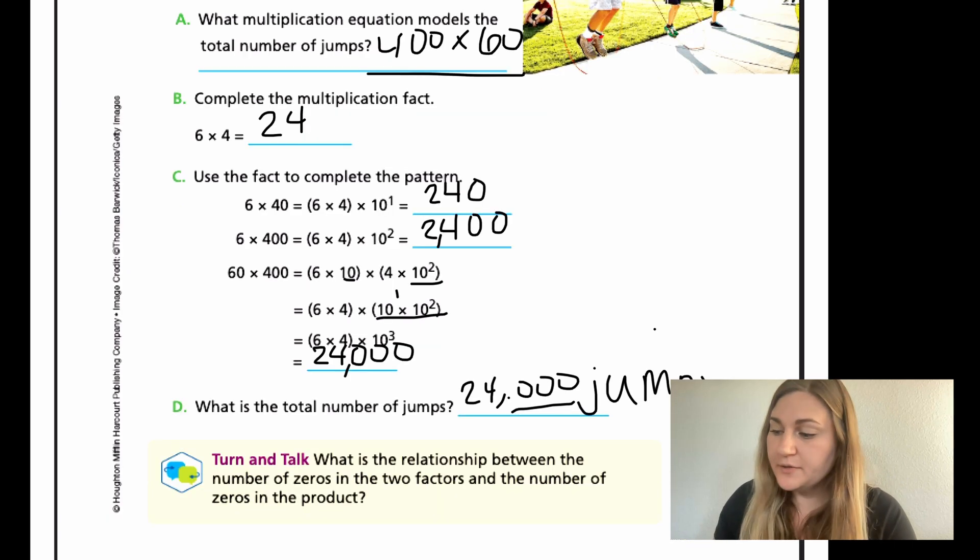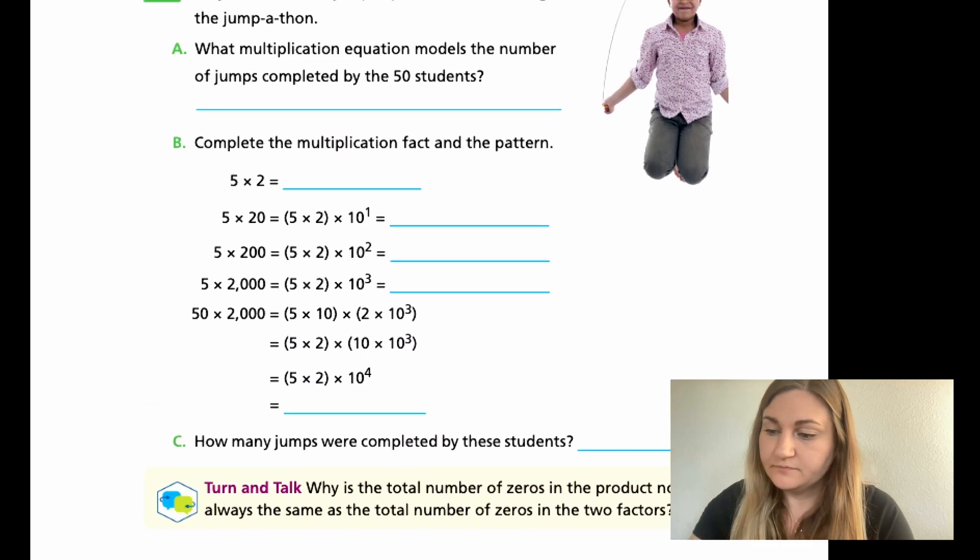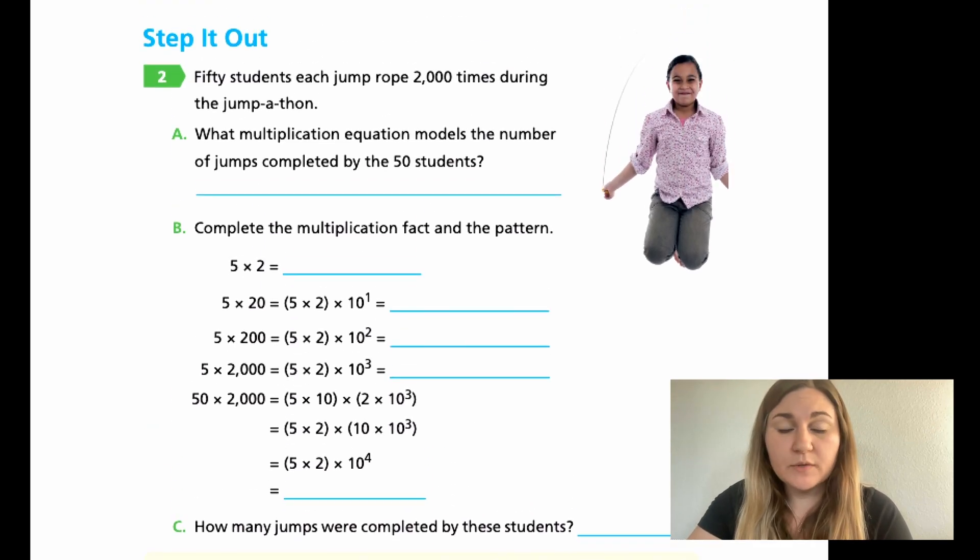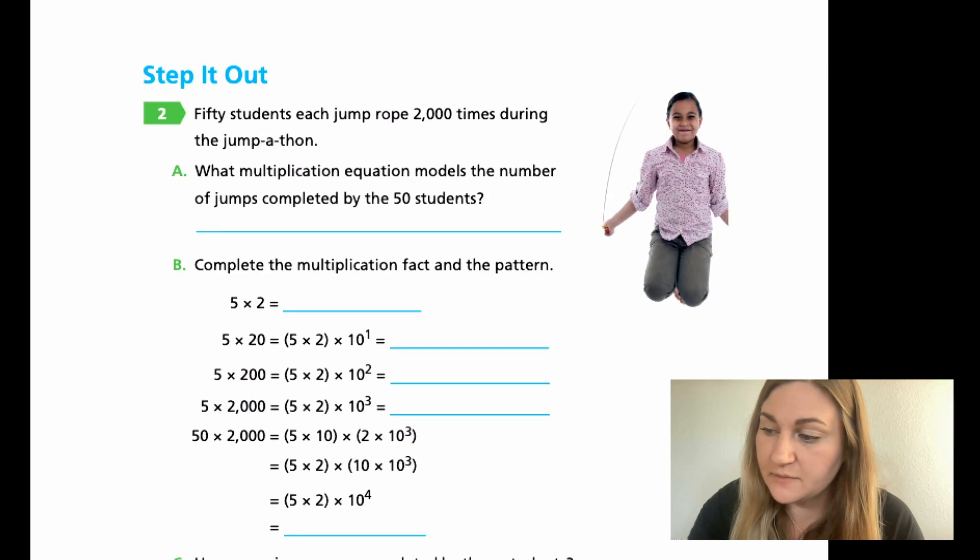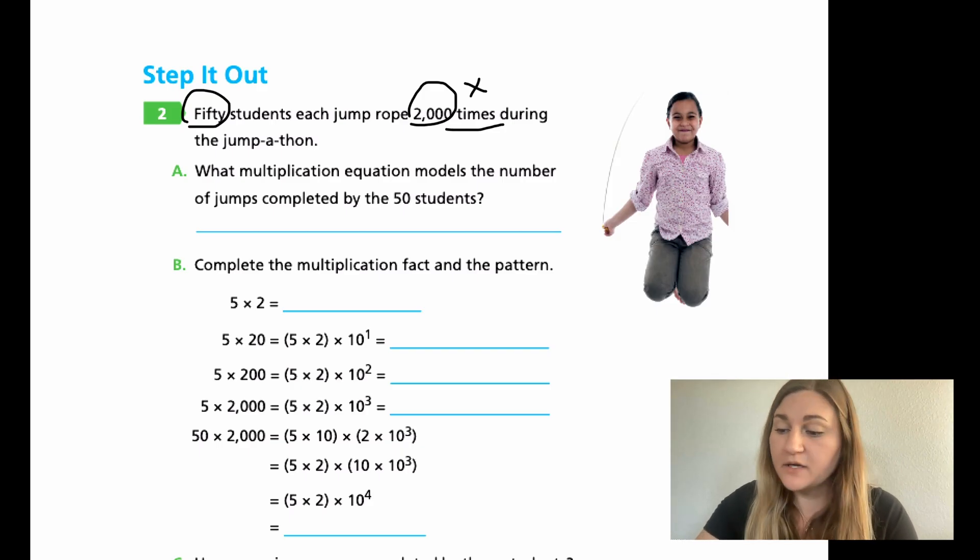I'm going to do one more problem with you. Moving to page 14, number 2. I'm going to read the word problem. 50 students each jump rope 2,000 times during the jump-a-thon. Identify the numbers and operation. 50 students, 2,000 times, we are multiplying. I want you to pause this video and try going through A, B, and C, then come back and join me.